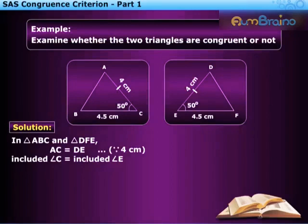Also, we have included angle C equal to included angle E. That is, 50 degrees. We have BC equal to EF, as both are of length 4.5 cm.